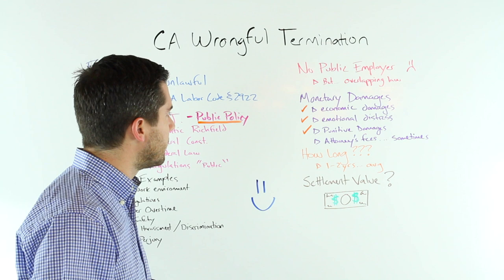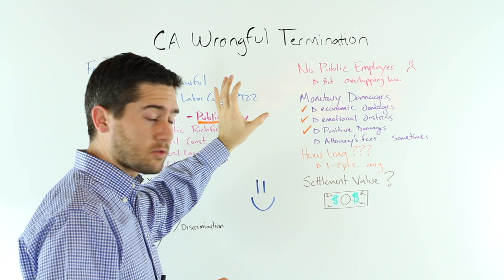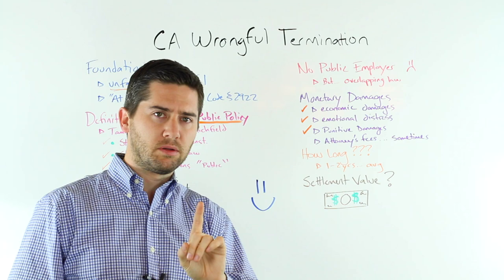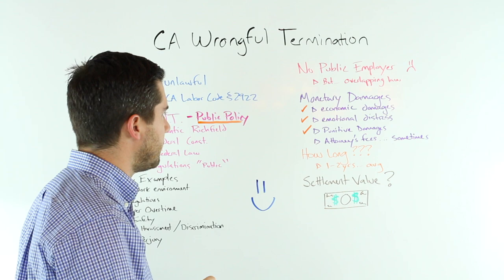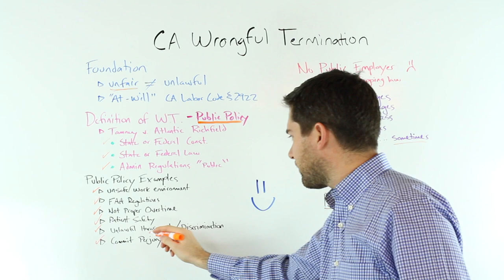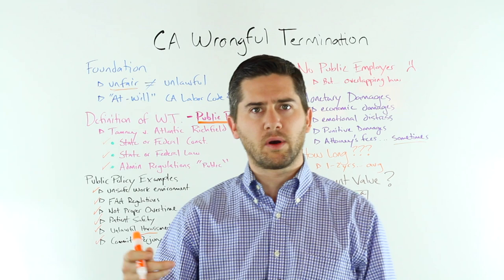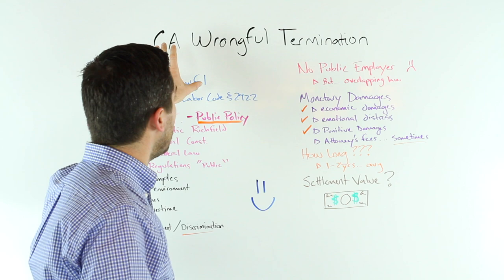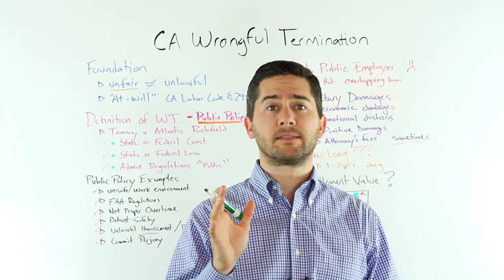Finally, you are not allowed under a wrongful termination exclusively wrongful termination to recover attorney fees. But if you have a good lawyer and if you can piggyback a claim off of the wrongful termination claim, you sometimes can get your attorney fees. The best example is unlawful harassment or discrimination. If you can show that the employer terminated you because of a protected category, you would bring a FEHA claim, which is a discrimination or harassment claim as well as a wrongful termination claim, and under that law you can get attorney fees. And so that's why the answer is sometimes.